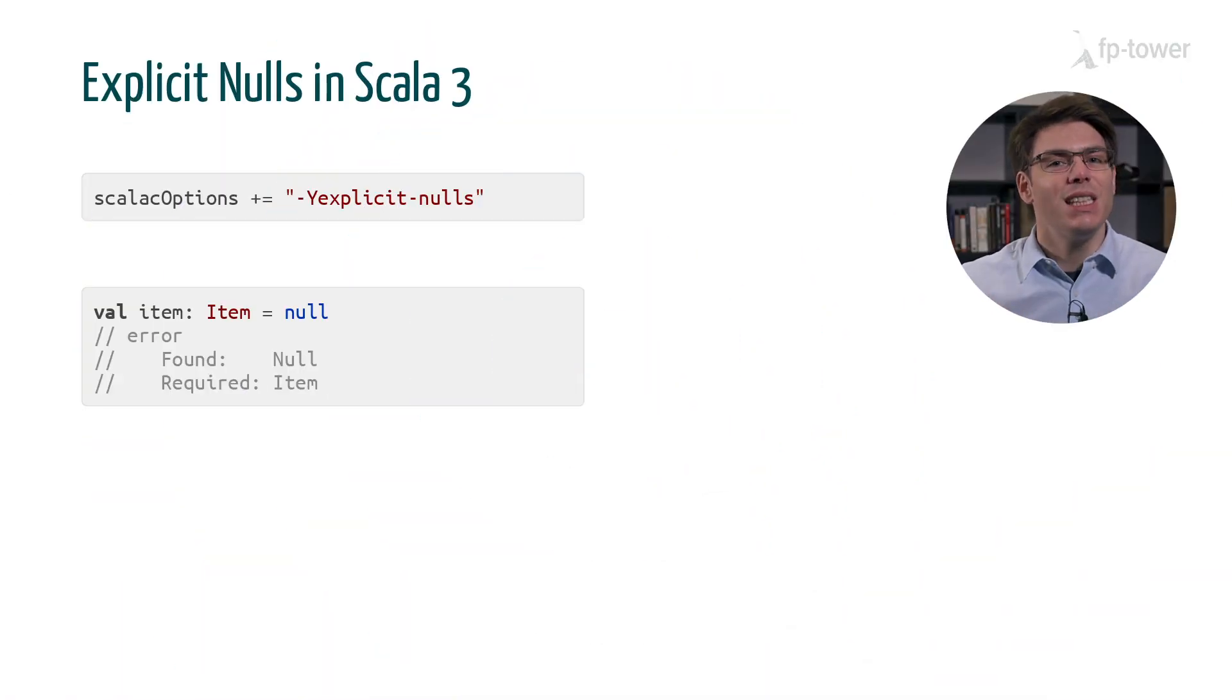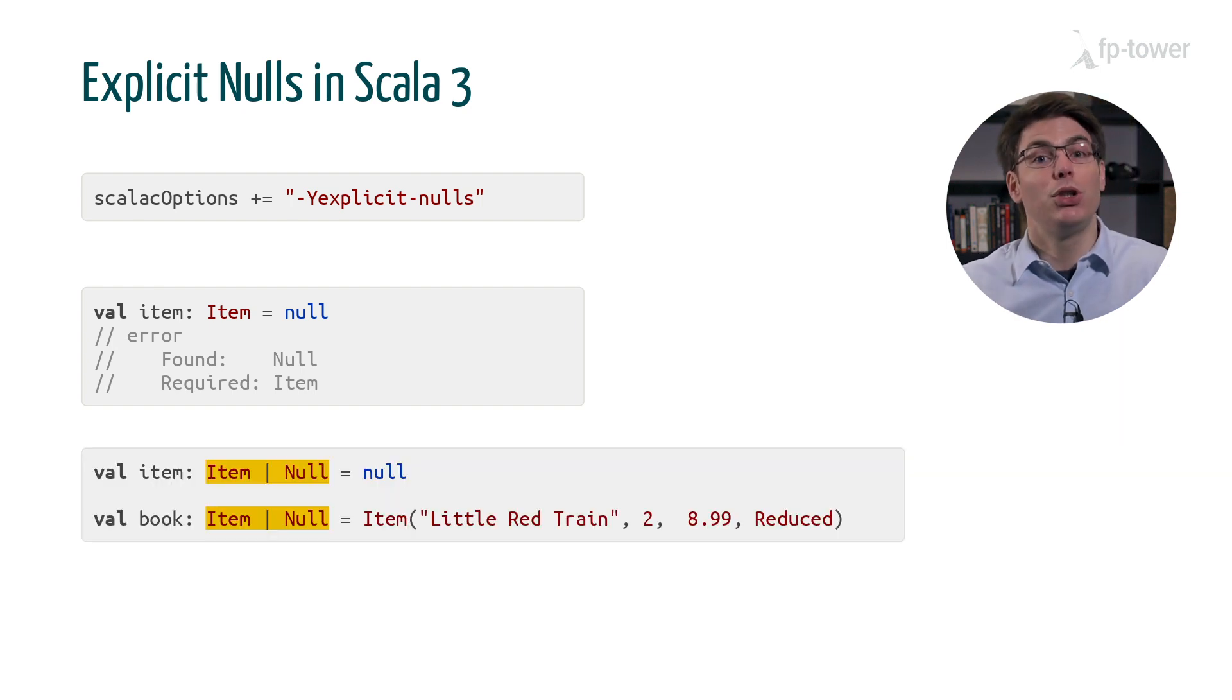Now if you still don't like the idea of ignoring null, you will probably be pleased to hear that Scala 3 is introducing a compiler option to remove null as a valid value for references. For example, if we try to assign null to a value of type Item, then we would get an error. However, should we wish to, we can reintroduce null using another feature from Scala 3: the union type. For instance, we can say that this variable has type Item or null, which will let us use null again. We'll talk about union types in more details in the final chapter when we cover error handling.